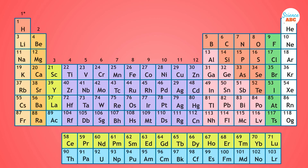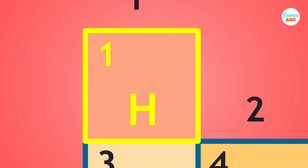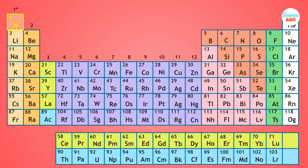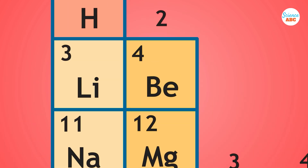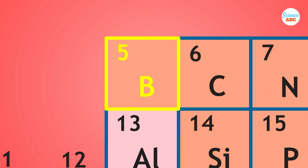The periodic table arranges elements according to their atomic number — the number of protons an element has. Hydrogen, the element with the lowest atomic number, has the first position, followed by increasingly heavier elements like helium, lithium, beryllium, and so on.